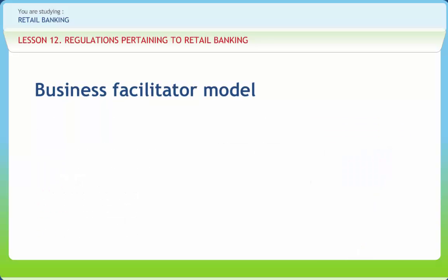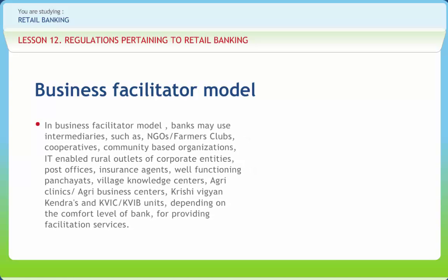For ensuring greater financial inclusion and increasing the outreach of the banking sector, it has been decided in public interest to enable banks to use services of non-governmental organizations or self-help groups as intermediaries in providing financial and banking services through the business facilitator model. In this model, banks may use intermediaries such as NGOs, farmers' clubs, cooperatives, community-based organizations, IT-enabled rural outlets of corporate entities, post offices, insurance agents, well-functioning panchayats, village knowledge centers, agri-clinics, agribusiness centers, Krishi Vigyan Kendras, and KVIC or KVIB units.